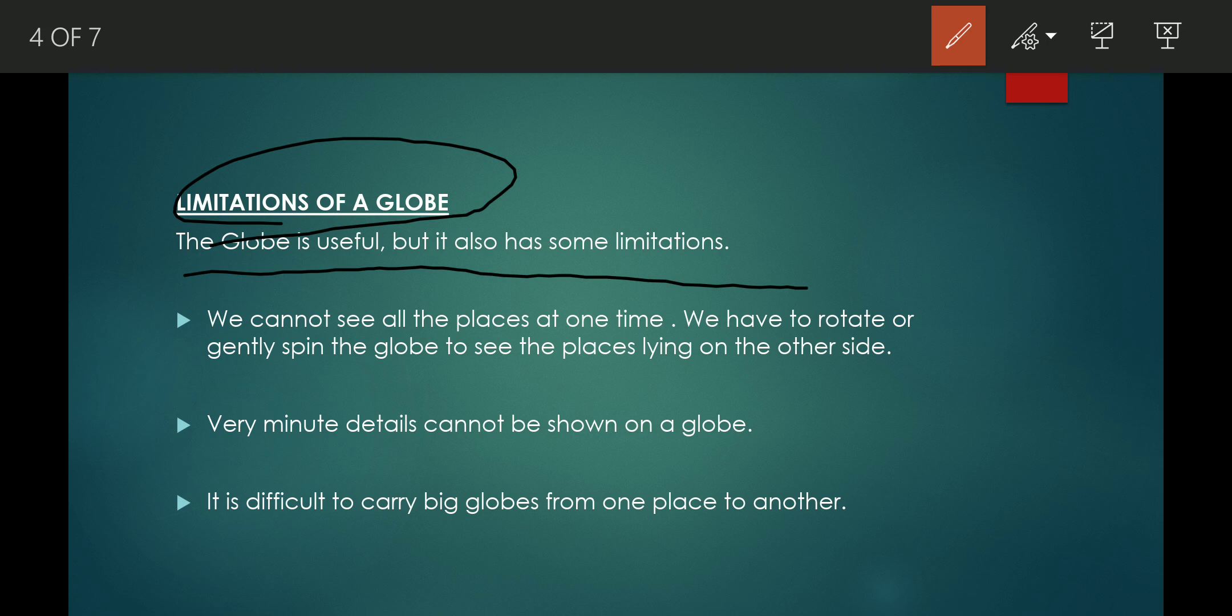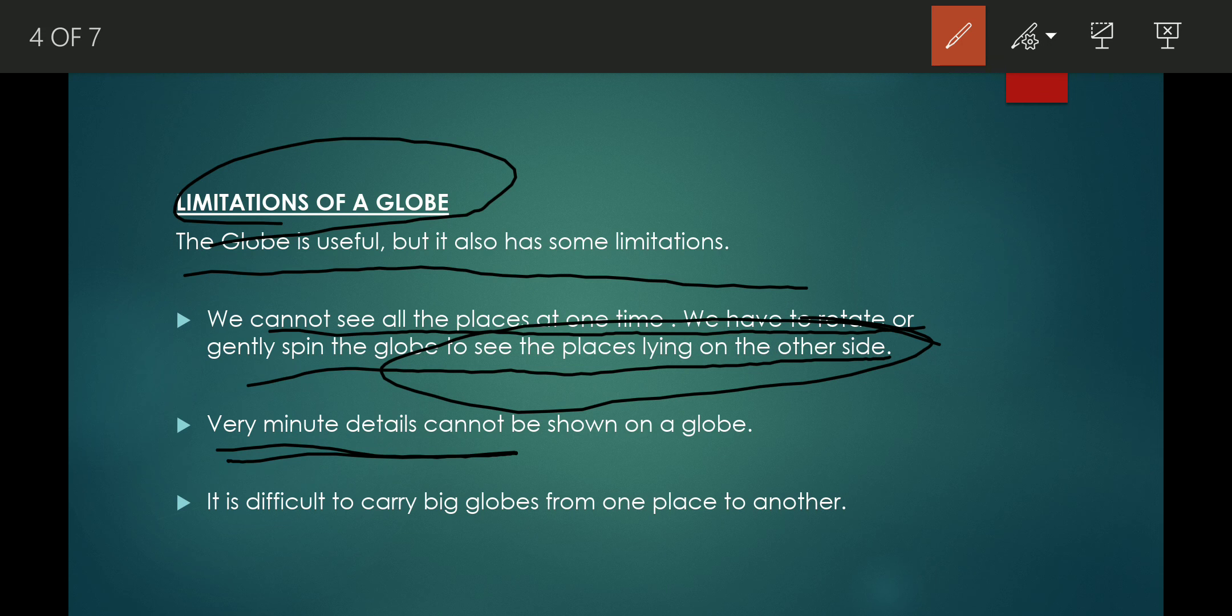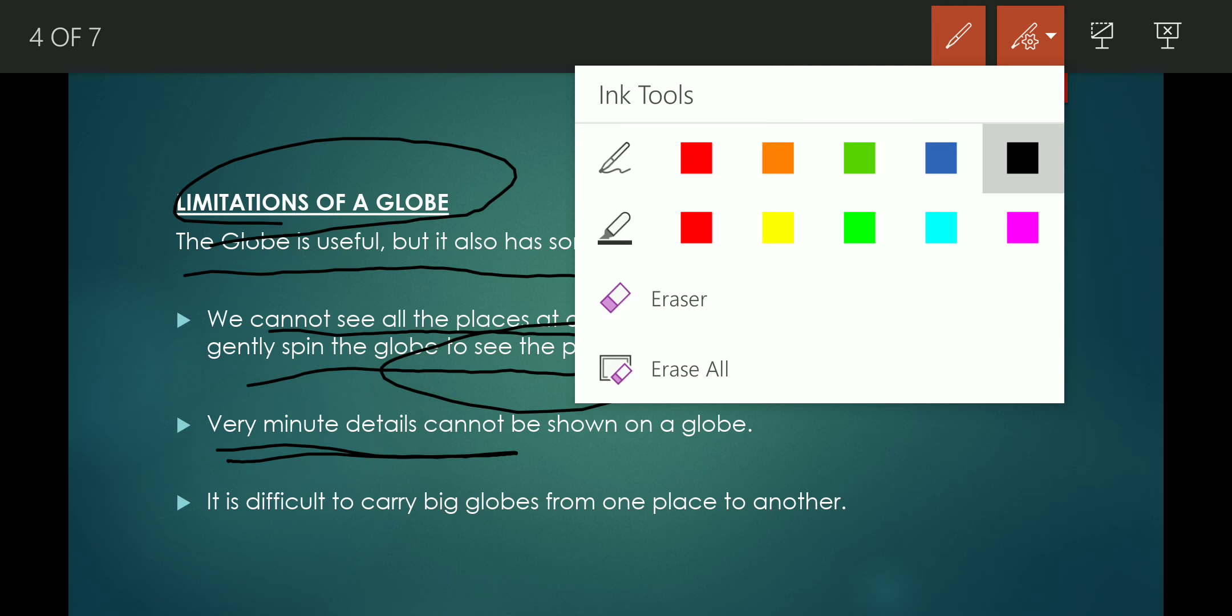We cannot see all the places at the same time because it is also spherical in nature. When we look at the first part, we can't see the other part of it. We have to rotate or gently spin the globe to see the places lying on the other side.